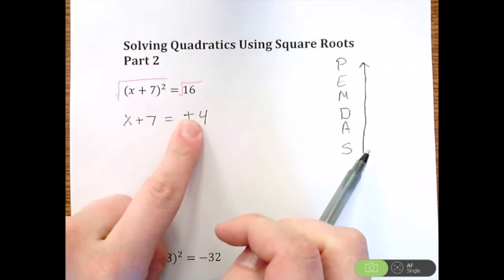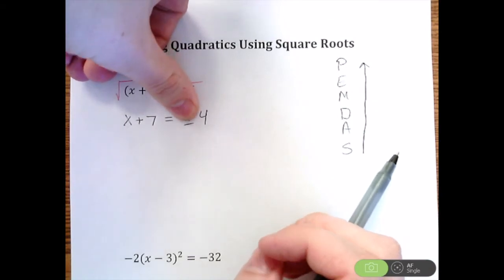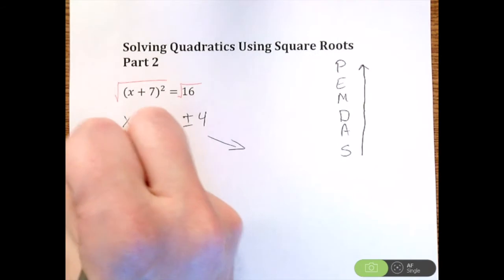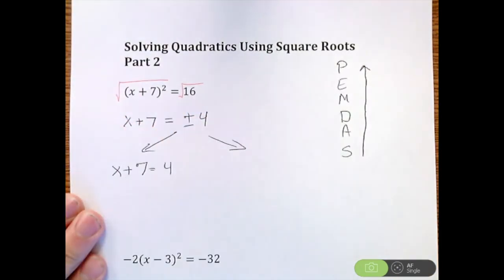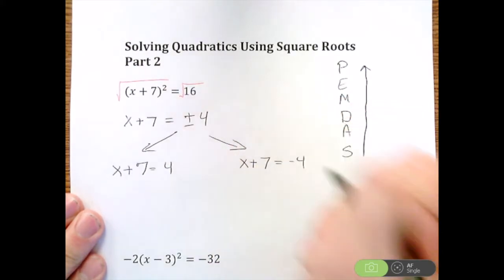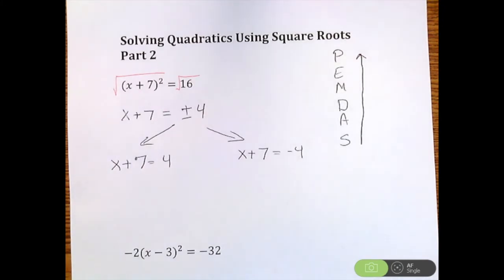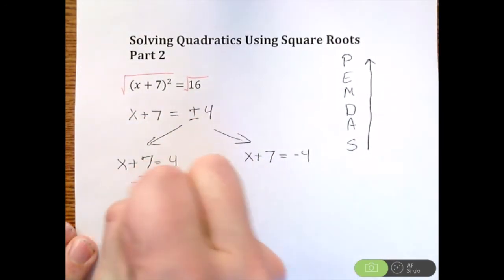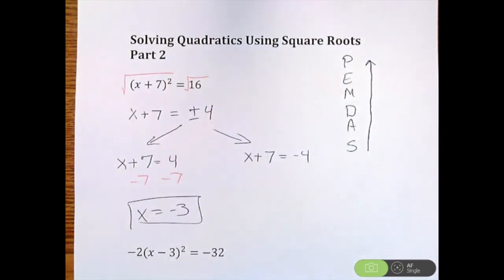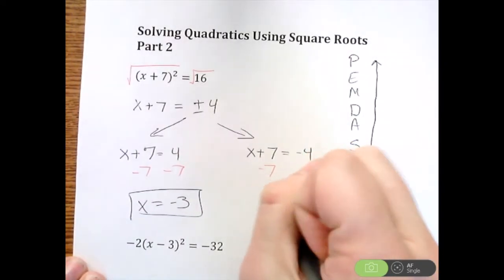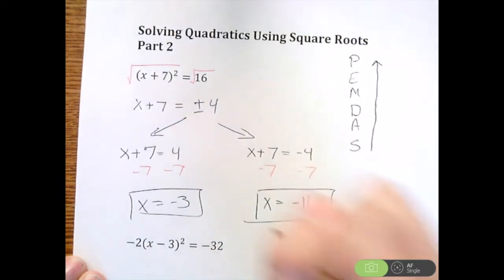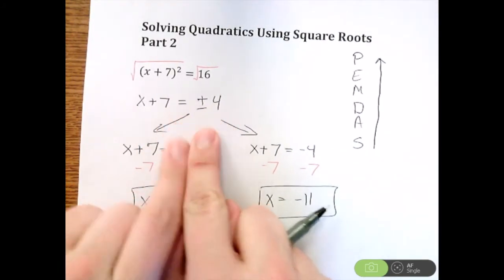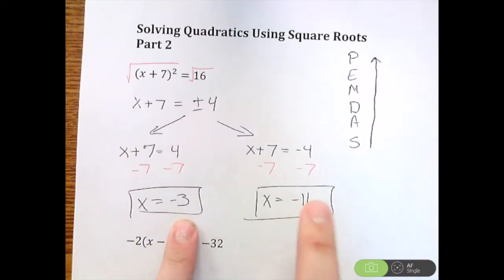We have x + 7 = 4 and x + 7 = -4. I want to split these up so I can solve each individually. For the left one, subtract seven from both sides: x = -3. For the right one, subtract seven from both sides: negative four minus seven is negative eleven, so x = -11. I like to split apart the plus or minus because easy mistakes can be made if you don't.